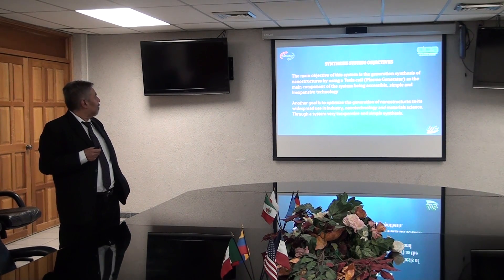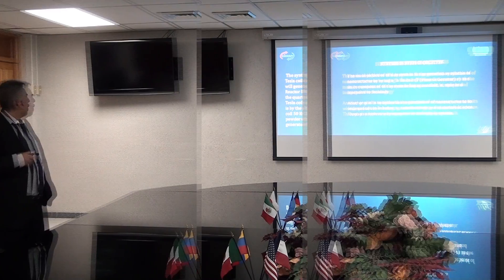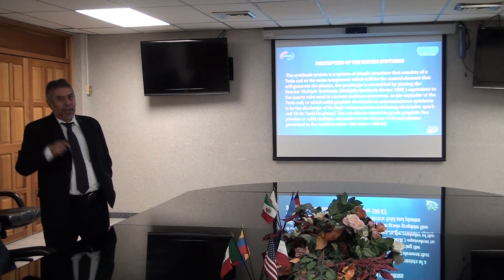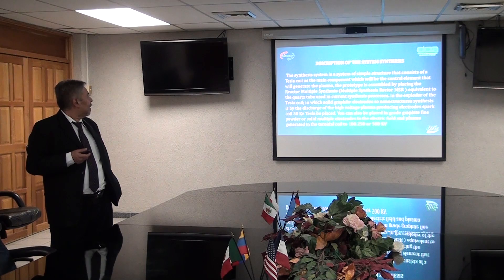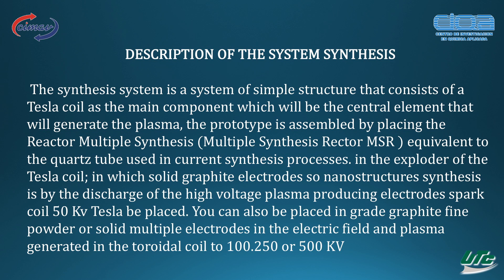It is a very economical and very simple synthesis method — that is the objective of this new system. The synthesis method consists, as I said before, of a Tesla coil that generates plasma in the MSR, the reactor of multiple synthesis, which is very equivalent to the quartz tube that today is used to produce this kind of nanostructures. The Tesla coil works with solid graphite electrodes, or you can also use fine dust particles made of graphite.